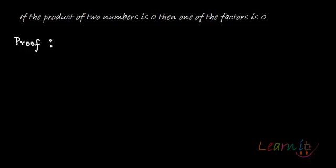Okay, another proof. Here I want to prove that if the product of two numbers is 0, then one of them has to be 0. One of the factors has to be 0. So if the product of two numbers or two factors—you can also call them factors—if the product of two factors is 0, then one of them has to be 0.